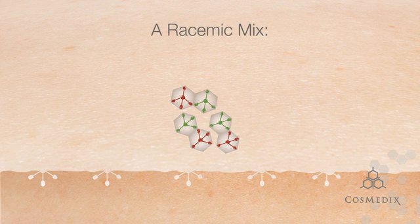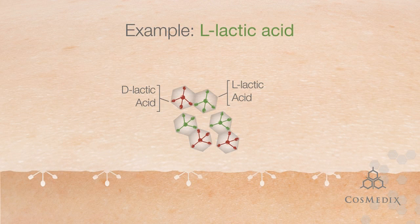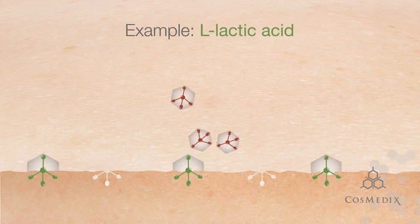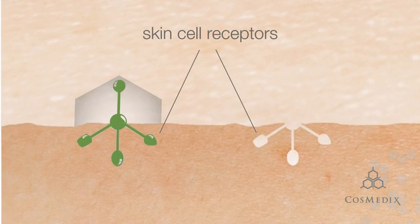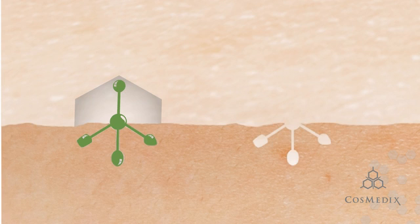Here's an example of a product containing both the D and L forms of lactic acid, a popular milk-based exfoliant. When applied to the skin, the L form of lactic acid fits perfectly into the skin cell receptors. By linking up at key points, L-lactic acid initiates a chemical reaction that encourages healthy exfoliation.